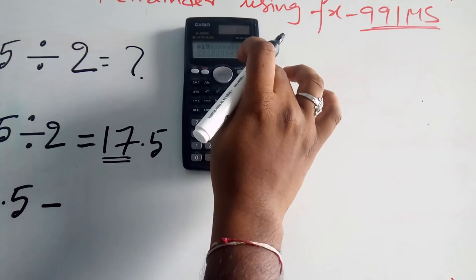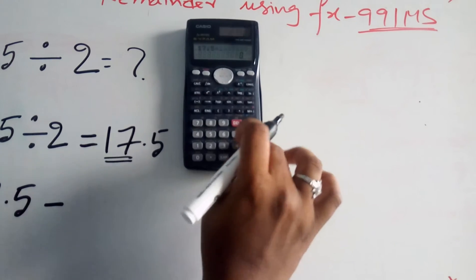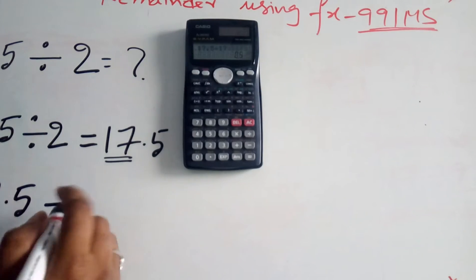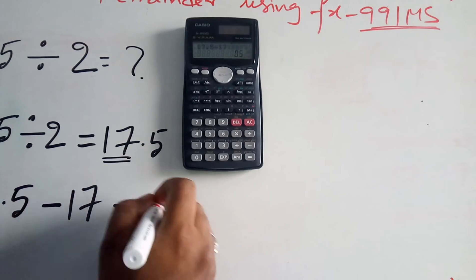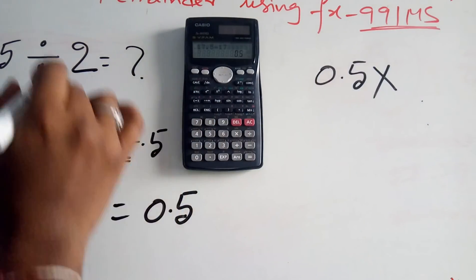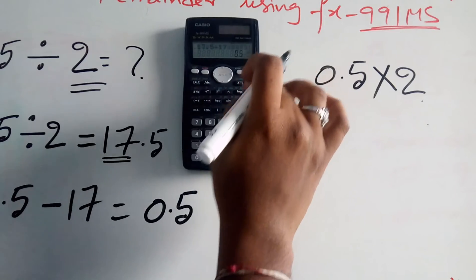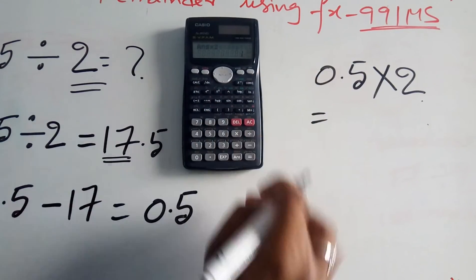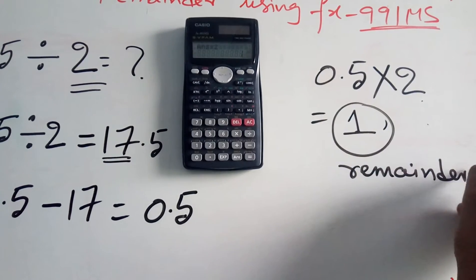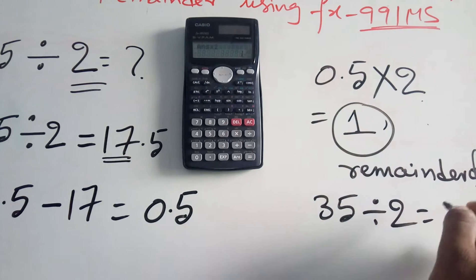17.5 minus 17 gives 0.5. The decimal value before the point is 17, so 17.5 minus 17 equals 0.5. Then you multiply 0.5 by 2, which equals 1. This is the remainder — the remainder of 35 divided by 2 is 1. That is the second method.